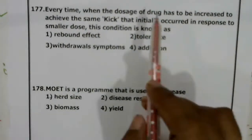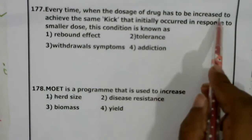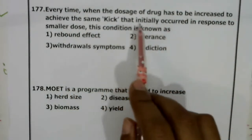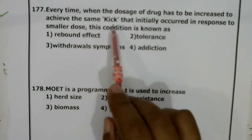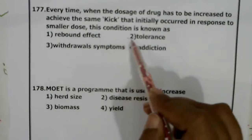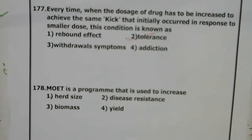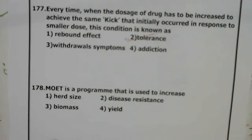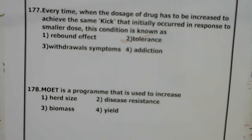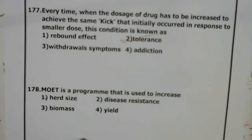Question 177: Every time the dosage of the drug has to be increased to achieve the same effect that initially occurred with smaller doses — this condition is called tolerance. A person taking cocaine or opium becomes emotionally attached to the effect, and over time needs more of the drug to achieve the same effect, indicating tolerance.